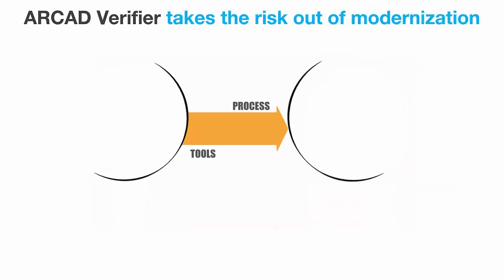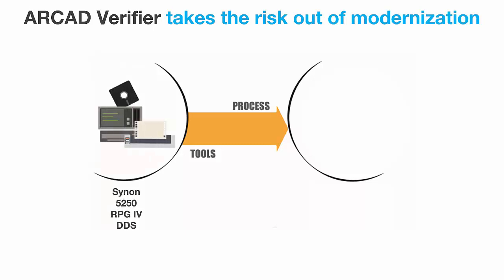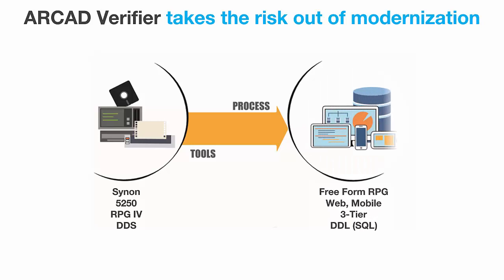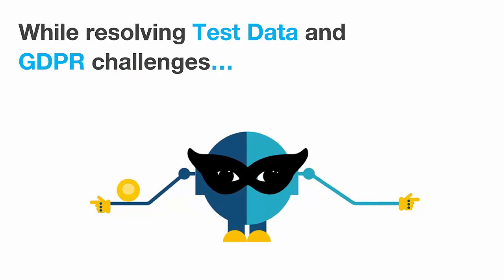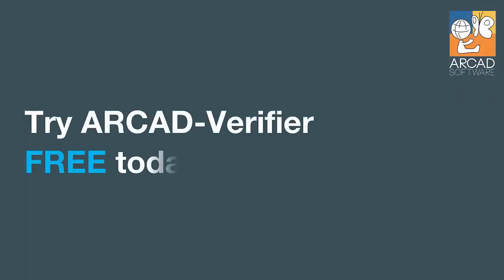And are you modernizing? Imagine running a transaction the old 5250 way, then running that same transaction from your brand new website and being able to tell at a glance that both processes updated the database in exactly the same way. How else would you do this — look at each field in each file? No one has time for that, but Verifier does. Or maybe you're facing data protection regulations like the GDPR. For effective testing you need realistic data from production, so combine Verifier with Arcade's anonymizer solution to mask sensitive data automatically. If you'd like to see what Arcade Verifier can bring to your DevOps process, just contact us at Arcade today.